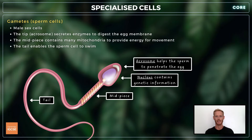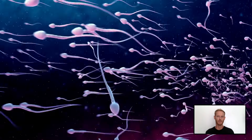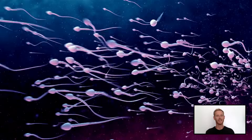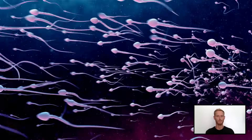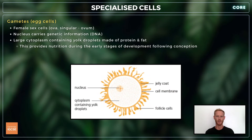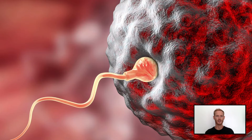Sperm and egg cells, otherwise known as gametes, are the sex cells whose sole purpose is reproduction. Sperm cells are composed of three sections. The head has a nucleus which contains the cell's DNA, and an acrosome that secretes enzymes that help the sperm cell penetrate the egg. The midsection is densely packed with mitochondria to provide energy for movement, and the tail allows the sperm cell to swim. Egg cells have a nucleus, cell membrane, and jelly coat, as well as a large cytoplasm that contains yolk droplets made of proteins and fats. These droplets provide nutrition during the early stages of development following conception.